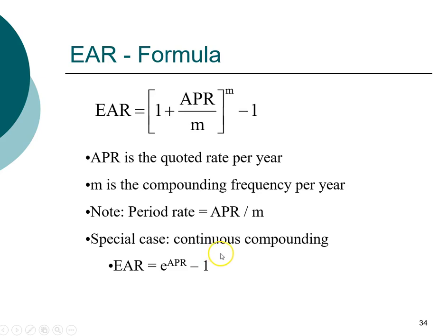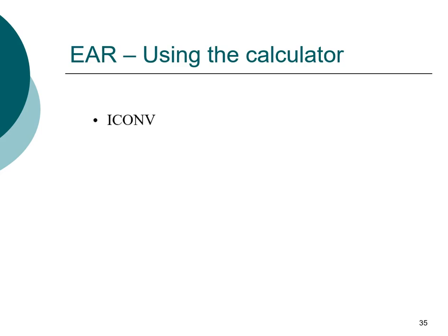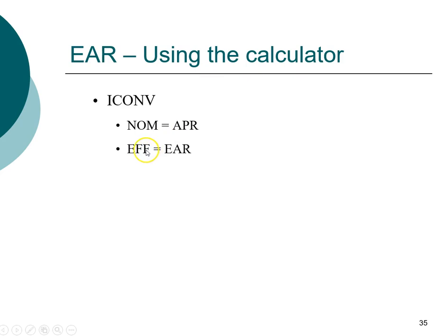We'll also work through a few numerical examples. In addition to the formula, you can use the financial calculator to convert between effective annual rate and annual percentage rate using the ICONV function. Note that on the calculator, the abbreviation NOM stands for nominal rate, which is equivalent to the annual percentage rate; EFF stands for effective rate, the same as effective annual rate; and C/Y stands for compounding periods per year, represented by the letter M in the formula.